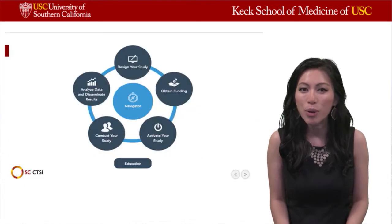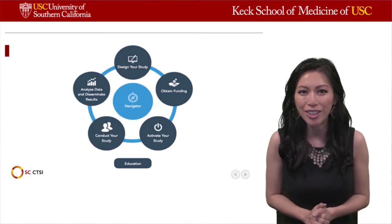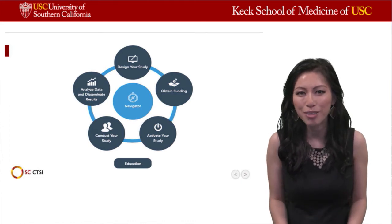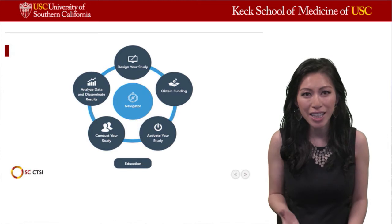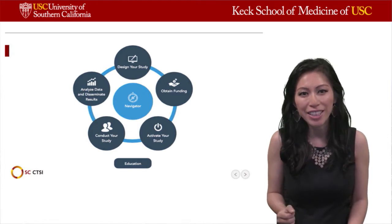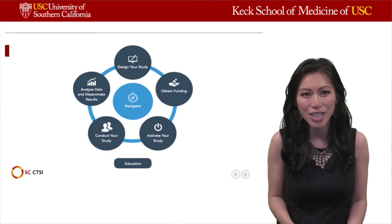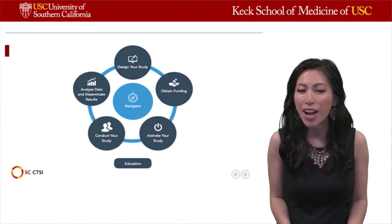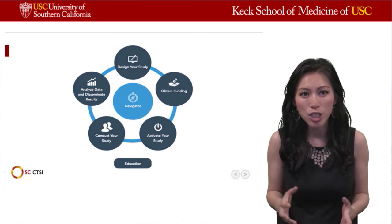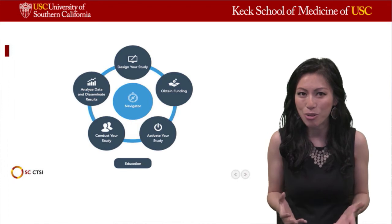When we think about the natural life cycle of a clinical trial, there are a few steps that we think about. It starts from the designing of your study, to obtaining funding, to activating your study, to conducting your study, and finally, when you get the results, you want to analyze the data and disseminate these results.